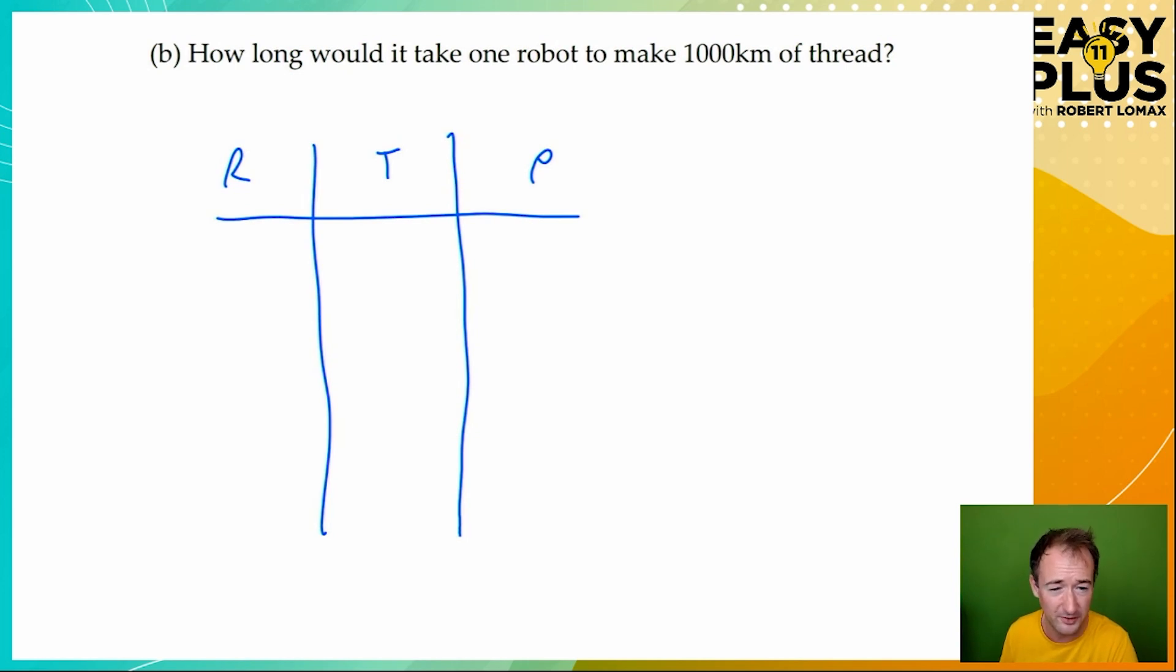I'm just using R, T, and P now to save time because we've established what these mean. And you can see that I've written in the information that we ended up with at the end of part A. We've got four robots here, but we want to know about one robot, as the question requires. So let's start off by making that change. And let's say that this robot is still making 100 kilometers of thread, because we know that later we can get from 100 to 1000 kilometers quite easily.